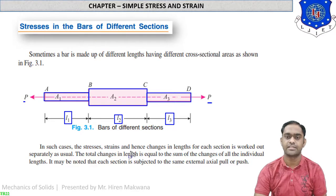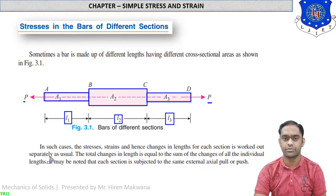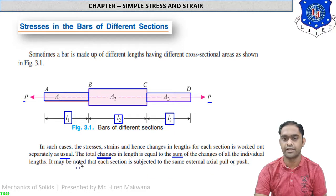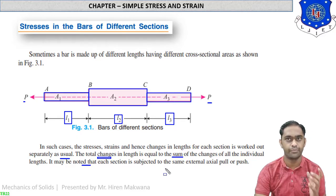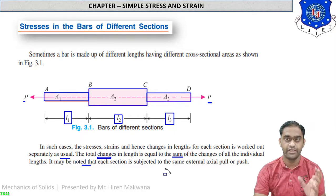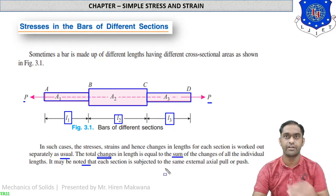In such cases, the stresses, strains, and hence changes in length for each section are worked out separately as usual. The total change in length is equal to the sum of the changes of all individual lengths. It may be noted that each section is subjected to the same external axial push or pull, so we have to balance this load.